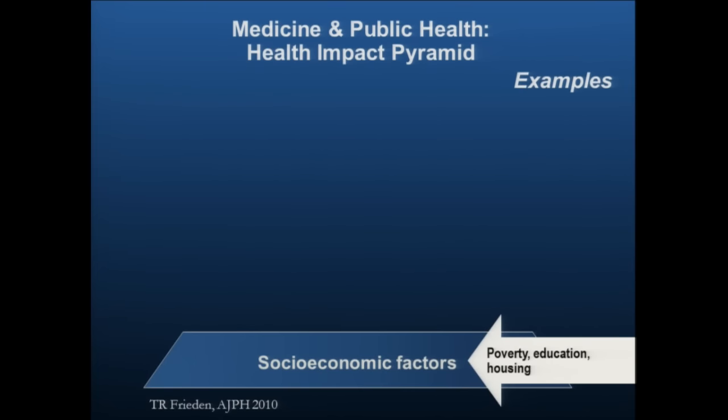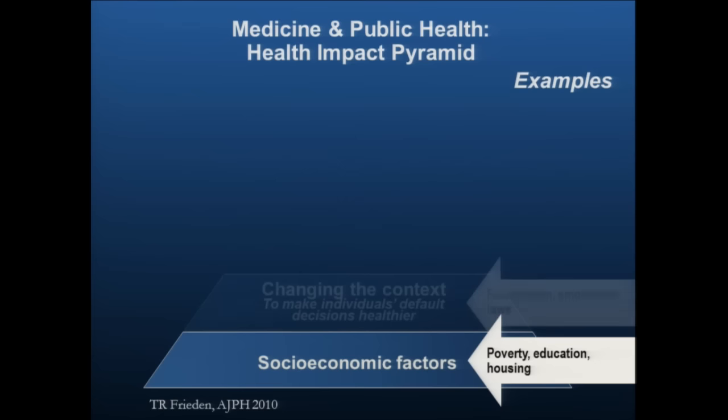I'm going to use more examples on the genetic side. Having worked at CDC for so long, when Tom Frieden became CDC director back in 2010, he published an American Journal of Public Health piece I want to take you through — that there are things we do to improve the health of populations. He called it the health impact pyramid. The most impact we can accomplish is at the bottom of the pyramid: by changing socioeconomic factors — working on poverty, education, housing, and jobs — we're going to improve health. This has nothing to do with precision medicine or precision public health.